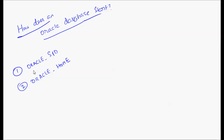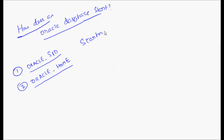In the previous video we saw that whenever we want to interact with an Oracle database, we need to set the Oracle SID that we want to connect to, and we need to set the Oracle home. So now let's assume the database is not online — the database has already been shut down. So what are all the processes involved in starting up a database?